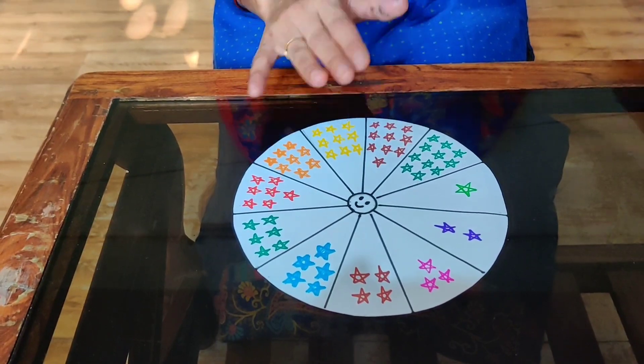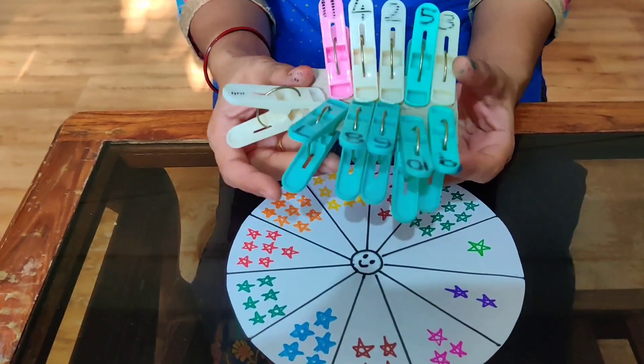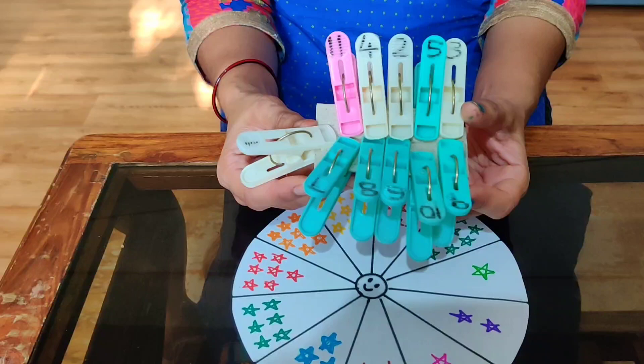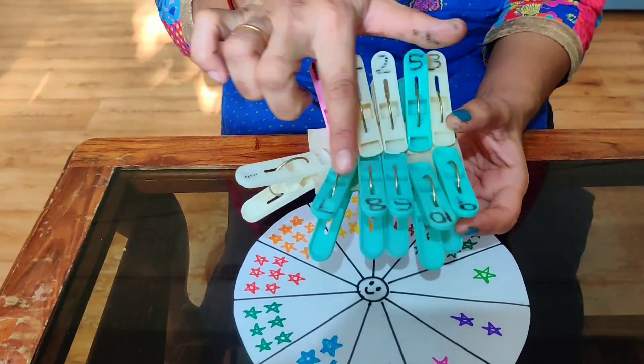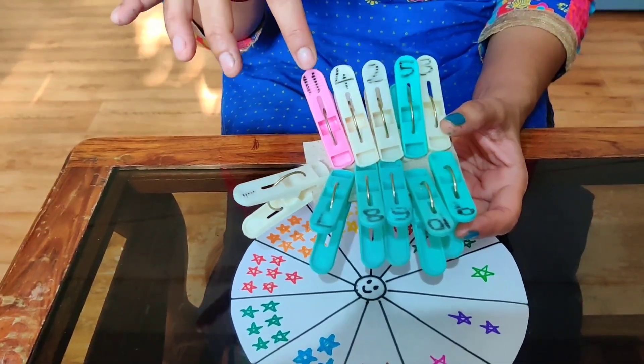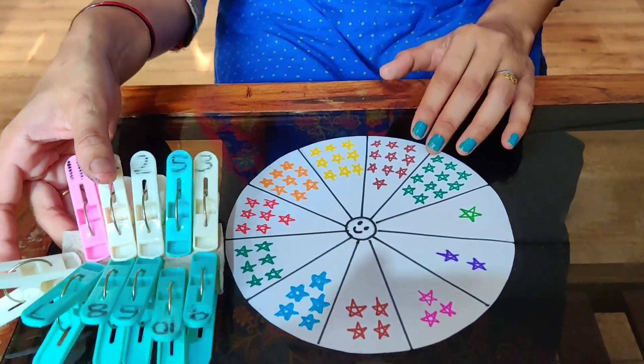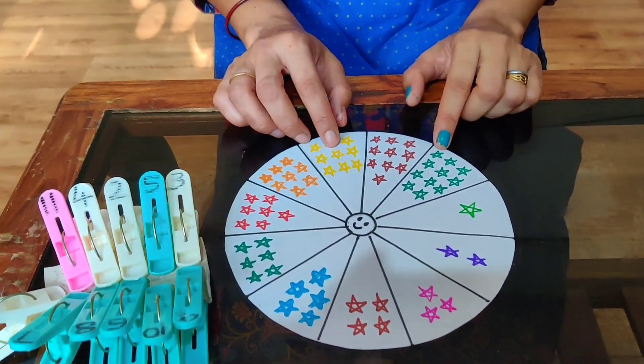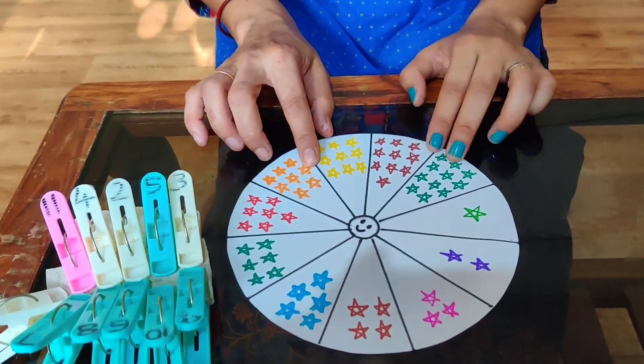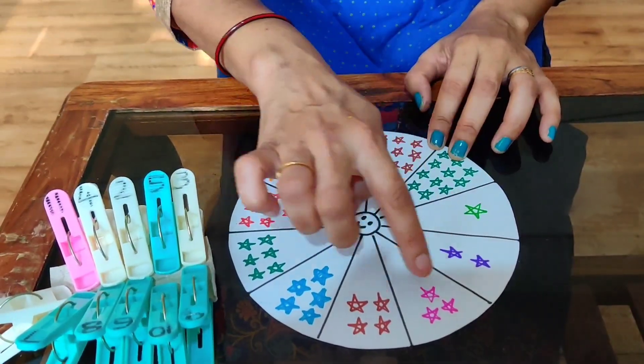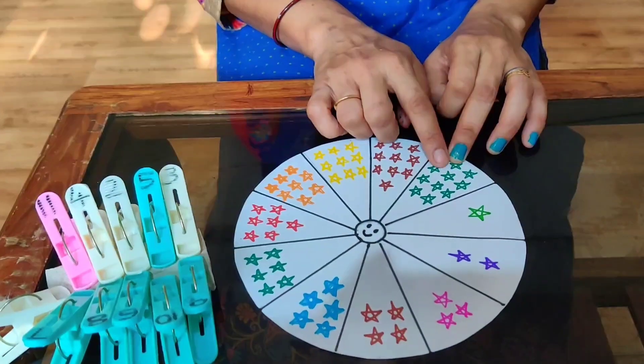Here, every family mostly has cloth clips. You can write numbers on the clips. How I have written it? From 1 to 11. And the number of parts made on the circular sheet here, I have marked 1 to 11. Till here, it is 11.